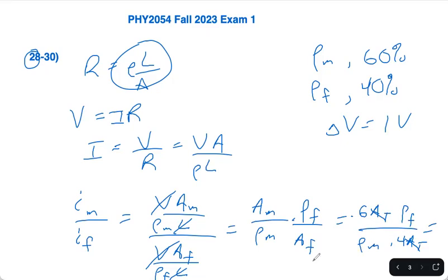Okay, where's my calculator? On the top, we've got 0.6 times the resistivity of fat is 30, divided by 0.4 times the resistivity of muscle is 15, and I get 3.